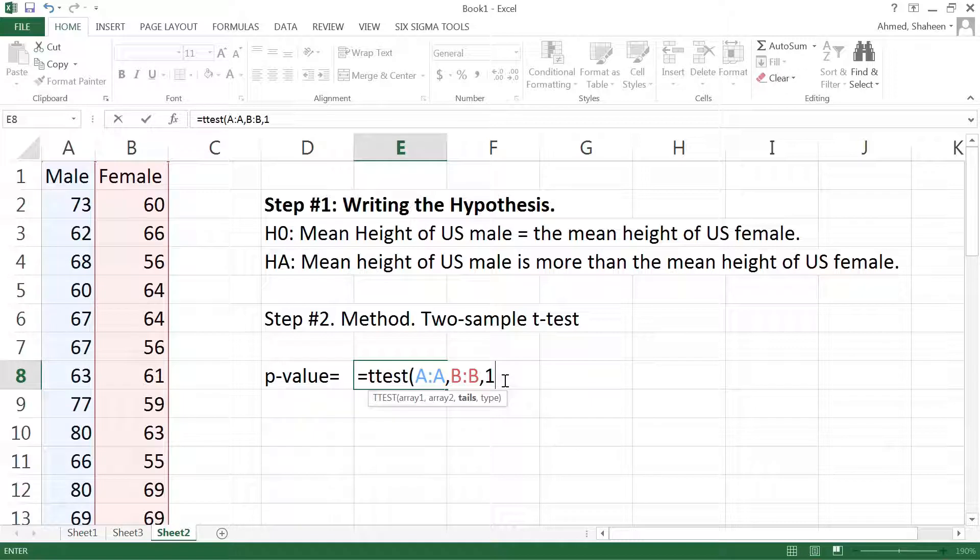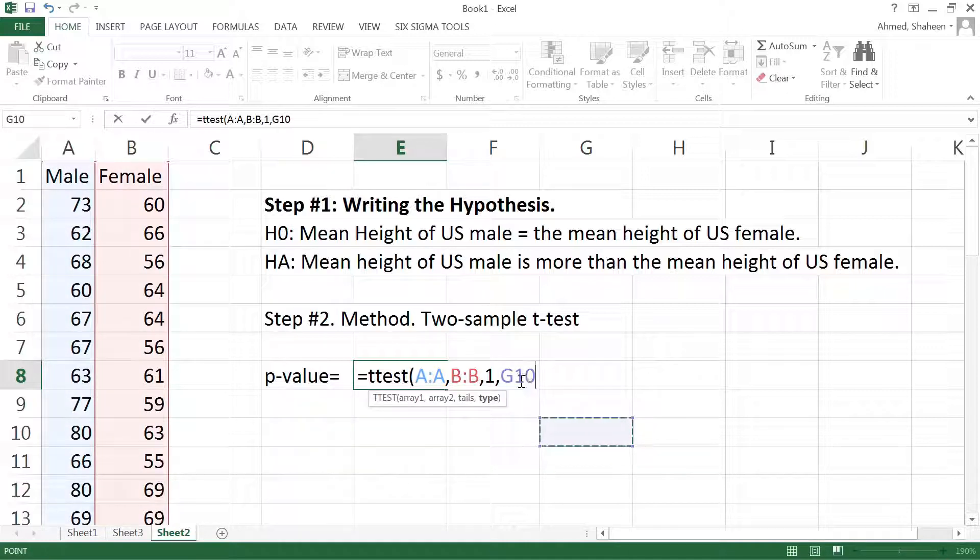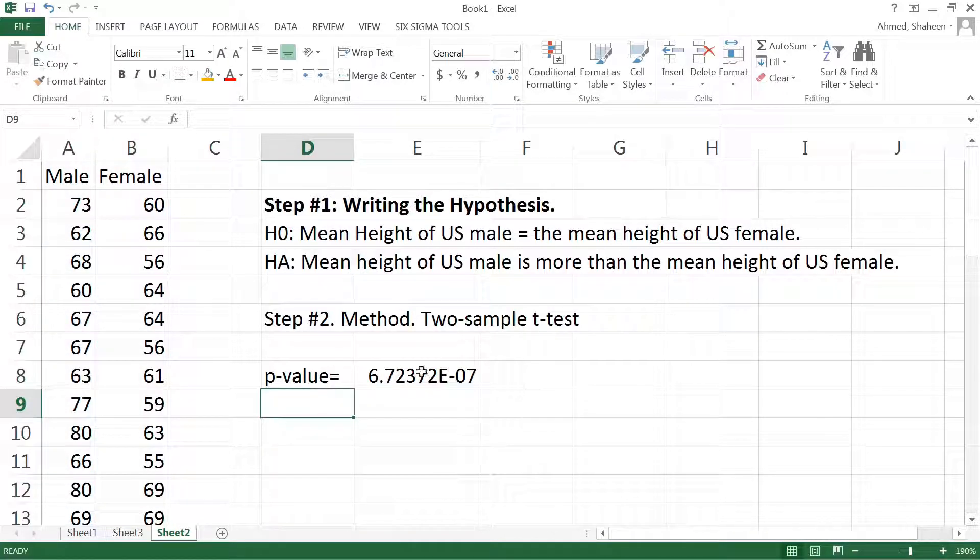And then Type is what type of t-test. There are three different types of t-tests, we'll explain that later. Let's pick the equal variance or unequal variance two-sample, three for unequal variance, and hit okay. We'll get this p-value. If you look at it, this is very small: point zero zero zero zero, six zeros, and then six seven. So almost six out of one million.